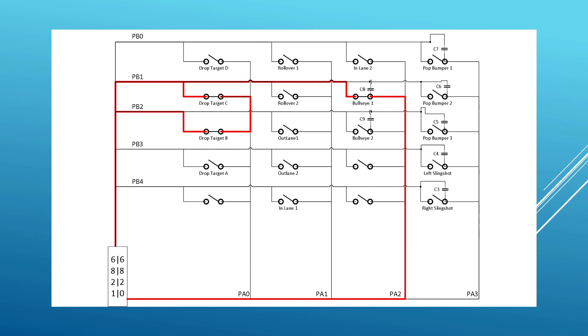When a switch closes with the capacitor attached, the capacitor can release its stored energy quickly, making sure the event is seen by the PIA. Slower actuating switches like wire rollovers and drop targets don't need them, as a switch will stay closed long enough to be seen by the PIA.